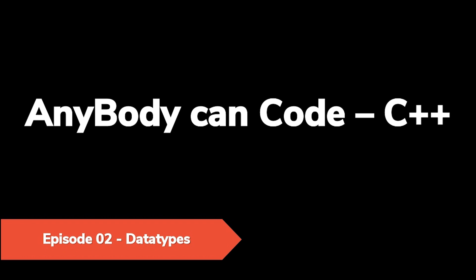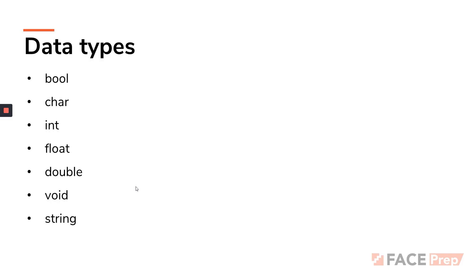In today's video, we will be seeing in detail what data types are and how you're going to use them. We have a list of data types in C++. Specifically, there are four or five which are really important, and apart from that we have certain more which we usually do not use. The basic data types are: boolean, char, int, float, double, void, and finally string.